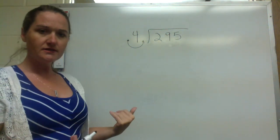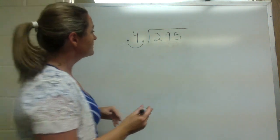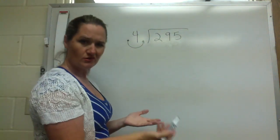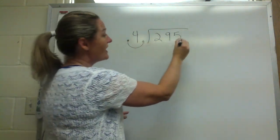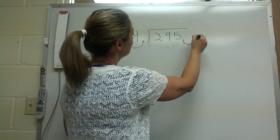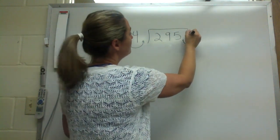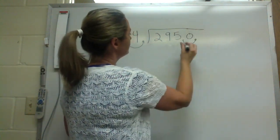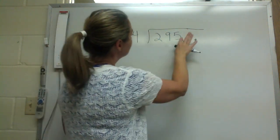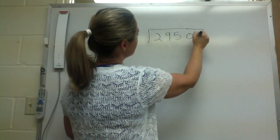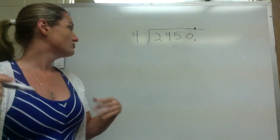But I can't just pick up a decimal and move it without doing something over here too. So think about 295 — where would the decimal be? It'd be at the end. So if I pick this up and move it over one, I have to do the same thing here — pick it up, move it over one. What should I put in that open space? I'll put a zero. So now I've got four, and this decimal I'm just going to bring straight up — four goes into 2950.